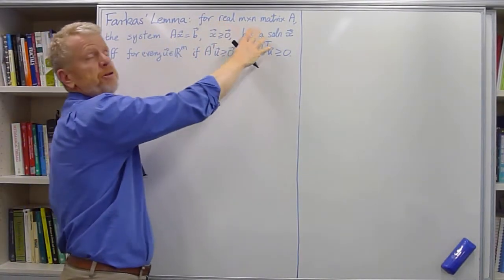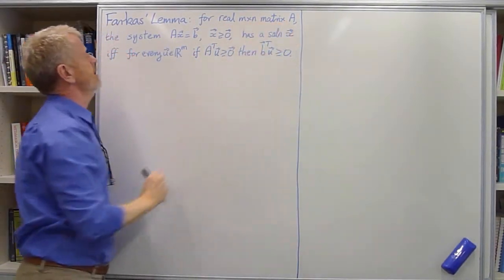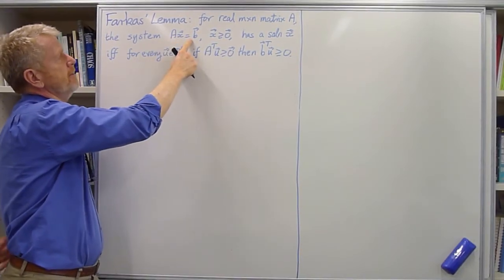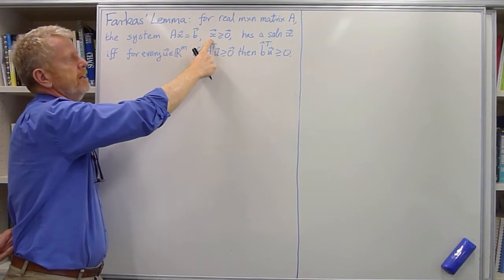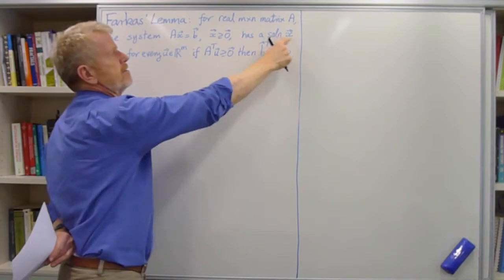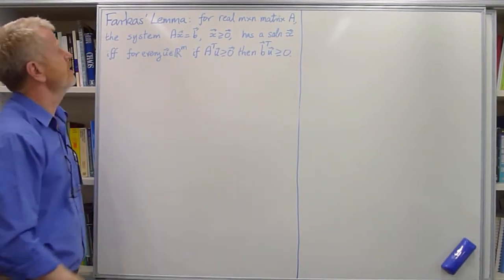That is, given any real m by n matrix A, the system of inequalities AX equals B, such that all components of X are bigger than or equal to 0, that system has a solution for the vector X